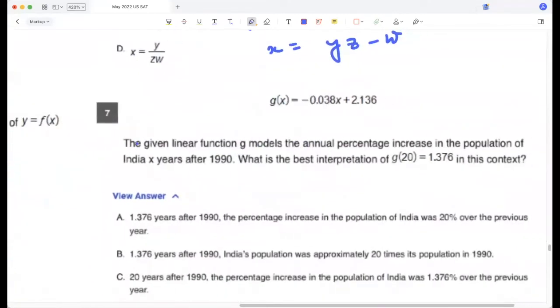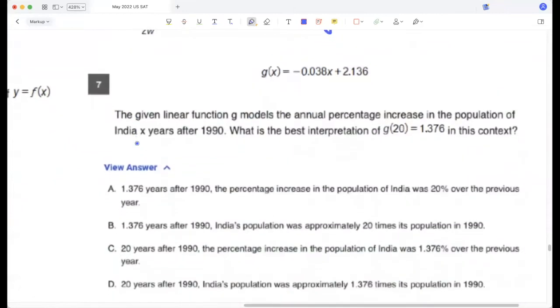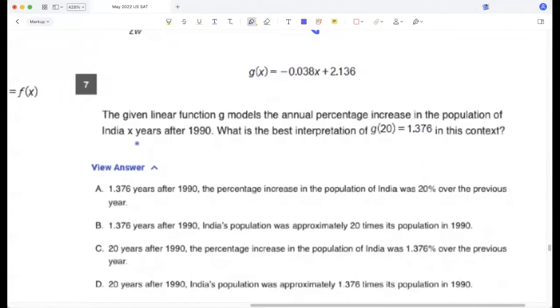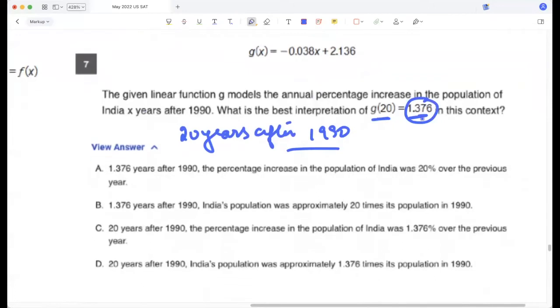The given linear function models the annual percentage increase in the population of India x years after 1990. What is the best interpretation of G(20) equal to 1.376? So G(20) would mean 20 years after 1990. The annual percentage increase in the population is 1.376. So 20 years after 1990, the percentage increase in the population was 1.376, so over the previous year. So that would be the percentage increase over the previous year. So C.